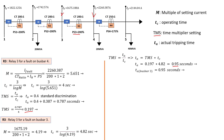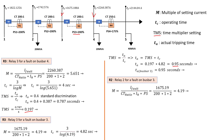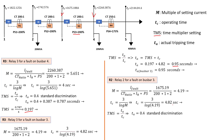For relay 2, we calculate for a fault on bus bar 3 first, then bus bar 2. Calculating M for relay 2 on bus bar 3 gives exactly the same value as relay 3, because both have the same plug setting and CT ratio. Therefore TC is also identical at 4.82 seconds. We then calculate TMS: adding 0.4 seconds standard discrimination to the previous TA gives TA equal to 1.35 seconds, and from that TMS equals 0.28.